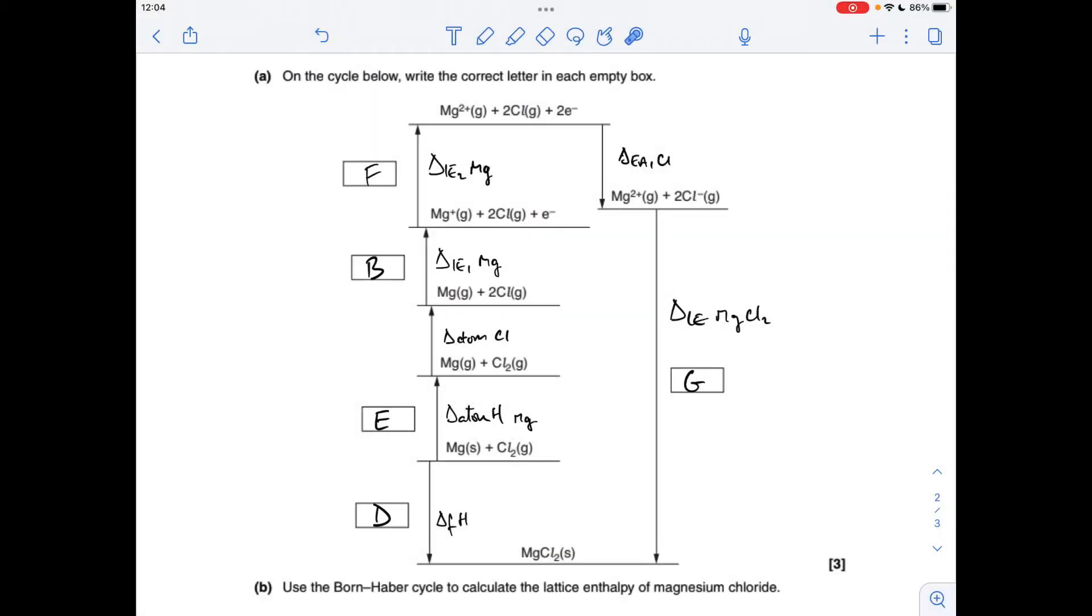Okay, so for part A we've got to put the right letter in the boxes. I'll just talk through all of the processes. Some of them I don't have letters associated with them, but it's worth mentioning anyway. So enthalpy change of formation here, elements to the solid lattice, that was process D. Solid magnesium to gaseous magnesium, that's the atomisation of magnesium.